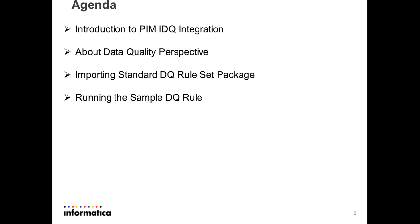We'll run the sample DQ rule and see the output of it. With PIM 7003 version, the data quality component has been integrated within PIM. Using this component you can validate the data and run quality checks on that particular data before exporting it to your web shops. Before data quality was integrated within PIM, you could use validation rules, but that was limited and not sufficient.